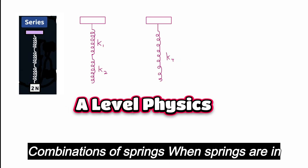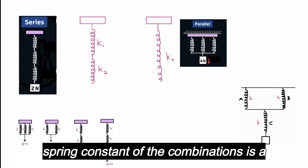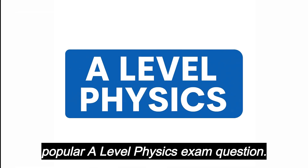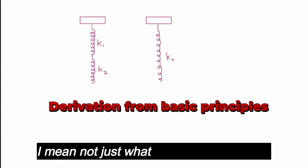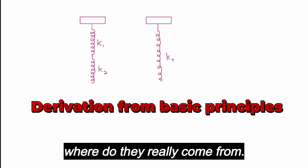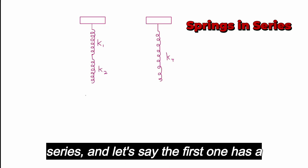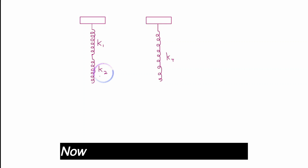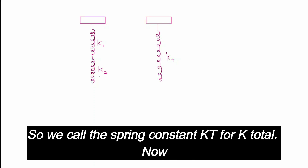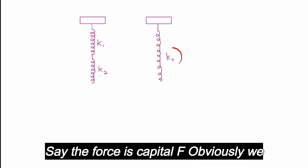Combinations of springs — when springs are in series and parallel, and finding the total spring constant of the combinations — is a popular A-level physics exam question. In this video we are going to see where those formulae come from. Consider two springs connected in series: the first has spring constant k1, the second has spring constant k2, and the equivalent spring has spring constant kt for k-total. We exert a force F on the system.